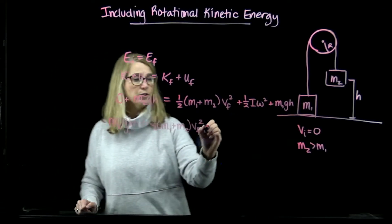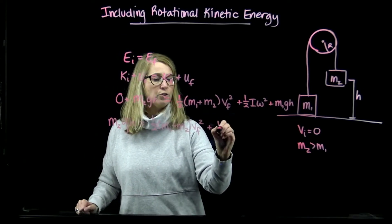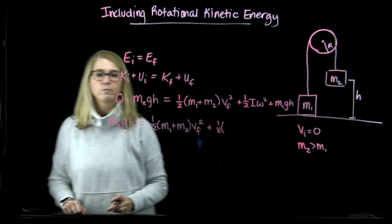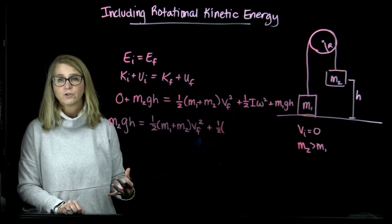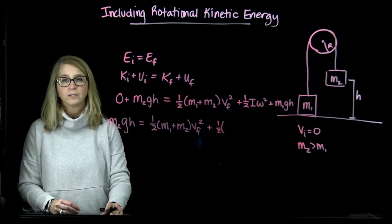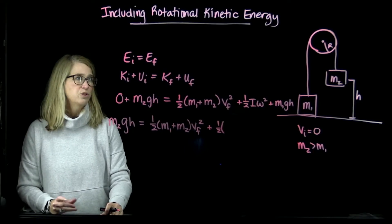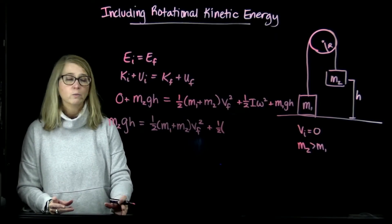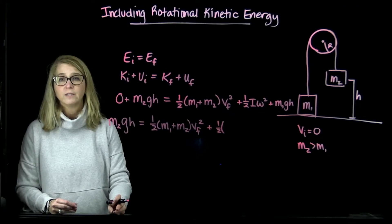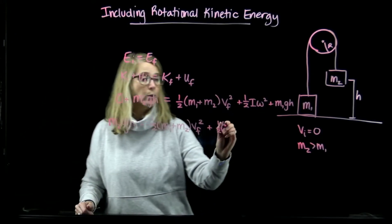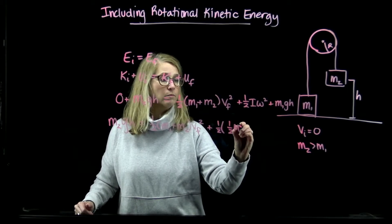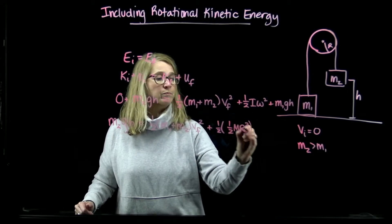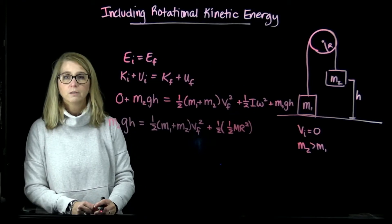First of all, for the moment of inertia of the pulley, sometimes you're just told what the moment of inertia of the object is. A lot of times we treat the pulley as a disk, and we know that its moment of inertia is 1/2 mr². I'm going to use a capital M to note the mass of the pulley and capital R as the radius.